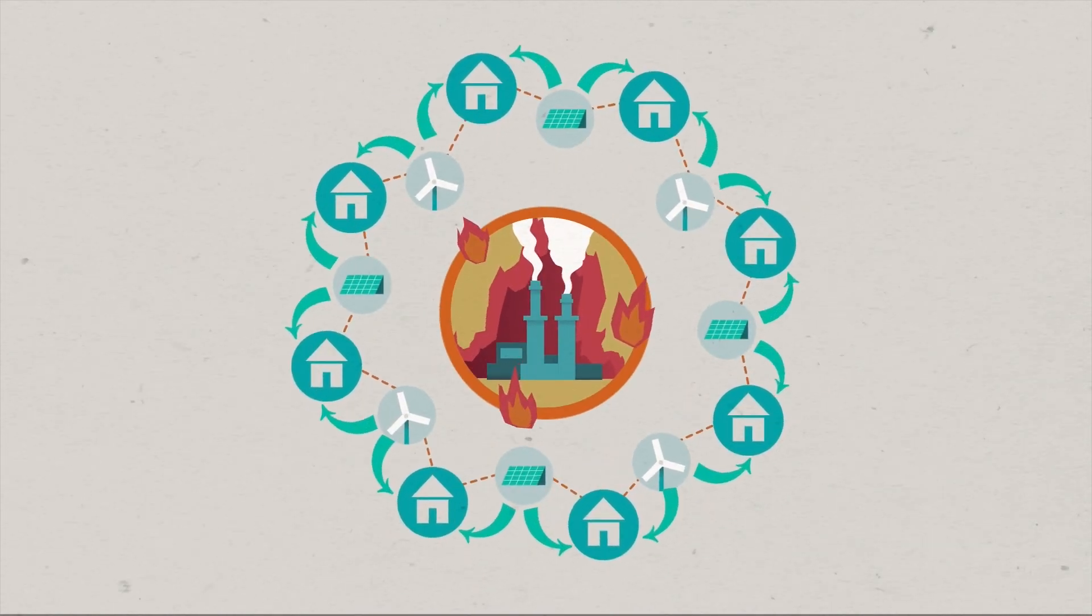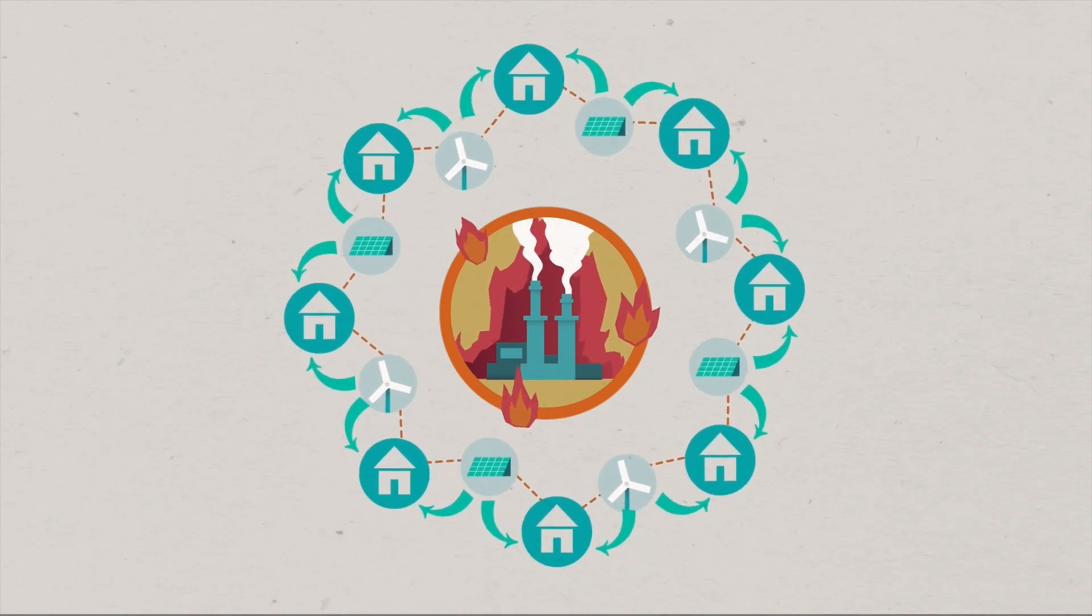So, if one area is disrupted, other areas can continue to generate electricity.